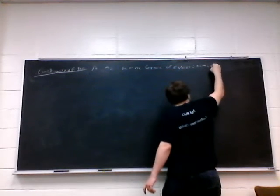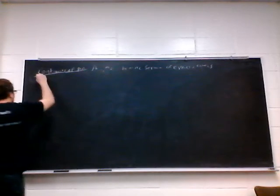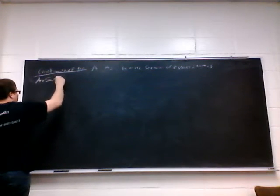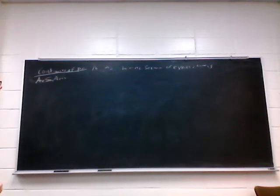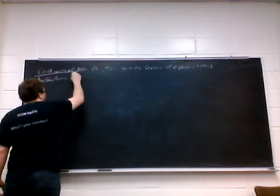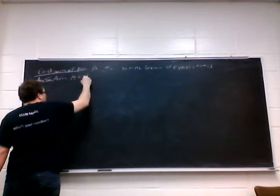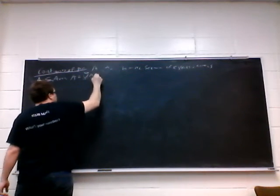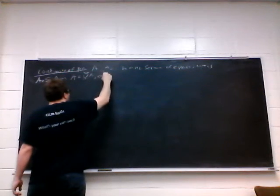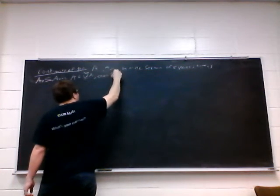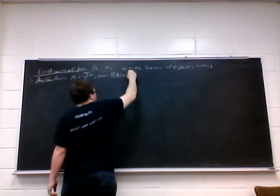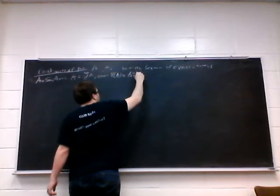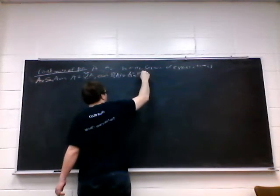That is, we have a sub k is a subset of a sub k plus 1. Now if we have a is equal to the union of all of our a's, then the probability of a is equal to the limit as n goes to infinity of the probability of a sub n.